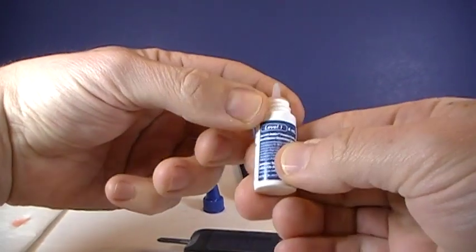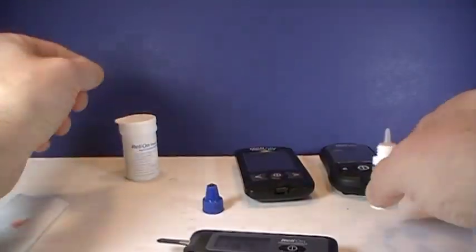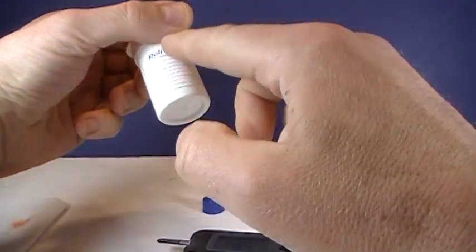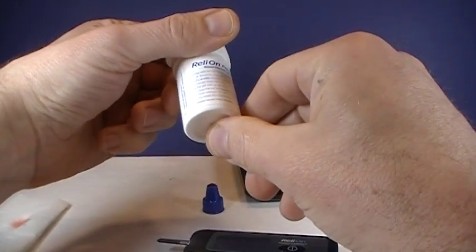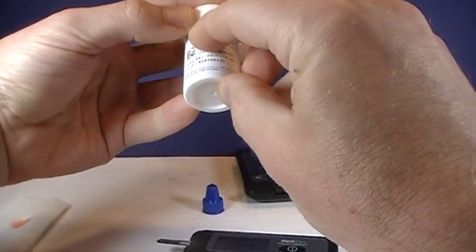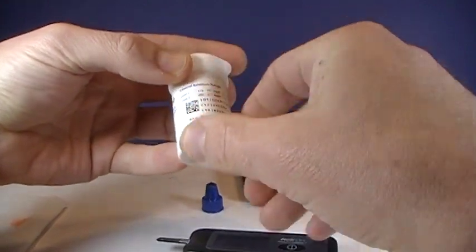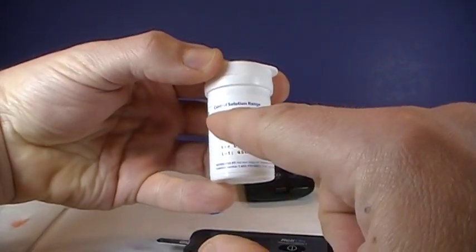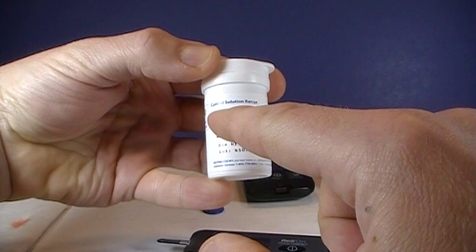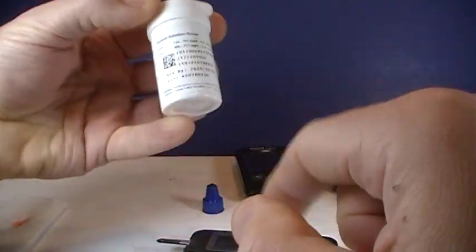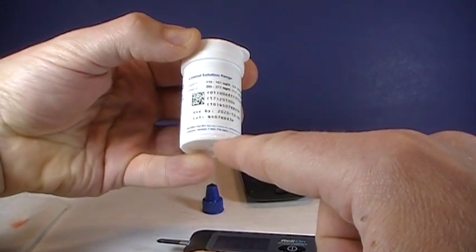Well this is RelyOn control solution level one and you need to look at the test strips, the bottle of test strips that you used in this test. For level one control solution should be between 119 and 161. So we're smack dab in the middle there, that would be fine.